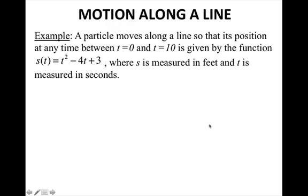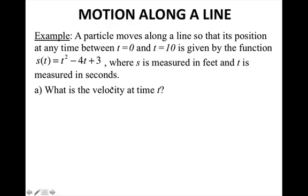Motion along a line. A particle moves along a line so that its position at any time between t equals 0 and t equals 10 is given by the function s of t equals t squared minus 4t plus 3, where s is measured in feet and t is measured in seconds. What is the velocity at time t? Every time it asks for velocity, you should think derivative of the position function. So you take the derivative of s of t to get 2t minus 4, and of course the units are feet per second.